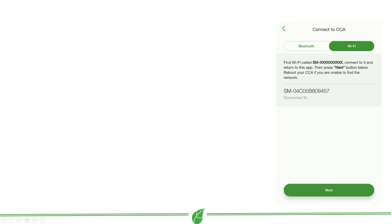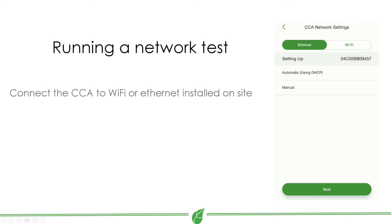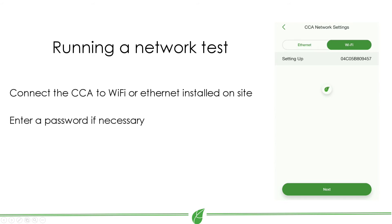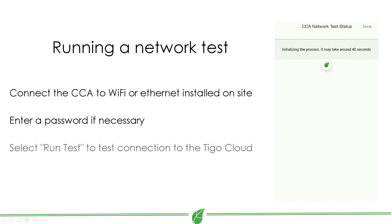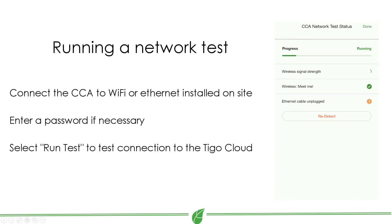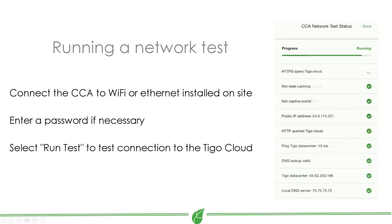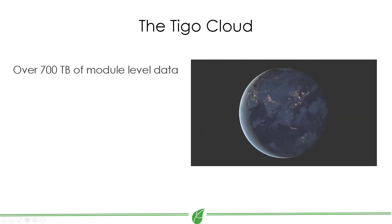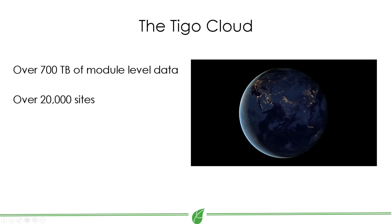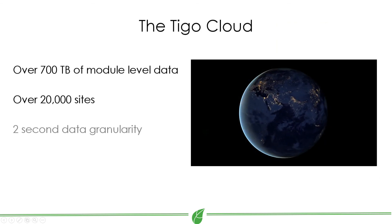In either case, when you have connected, proceed. Configure the CCA's Ethernet or Wi-Fi internet connection using a Wi-Fi password if necessary. Select run test — this will verify that the CCA has a stable connection to the internet for sending system data to the Tygo cloud, the most expansive database of solar module data on earth.